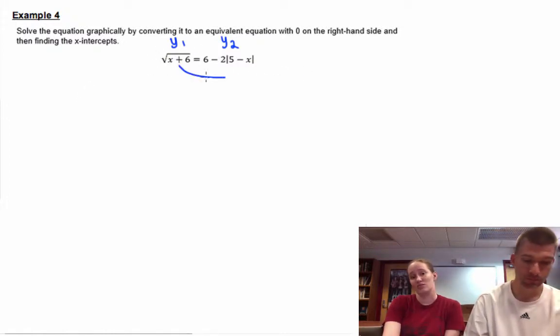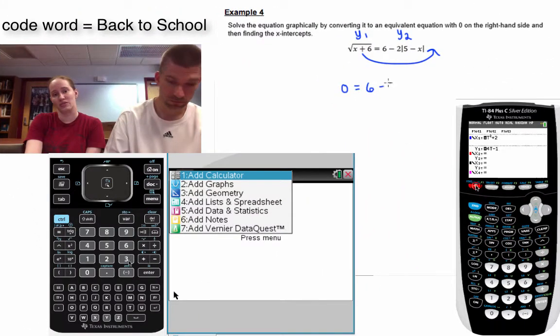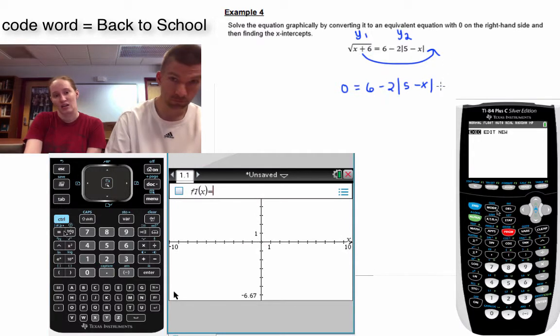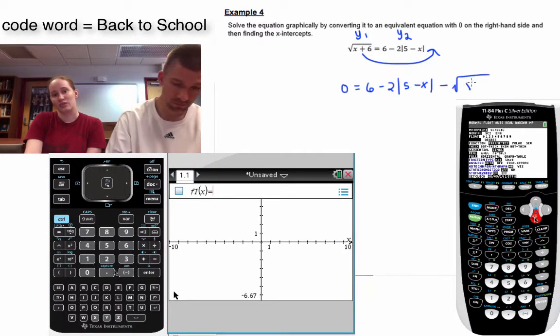So it's quicker to move the square root over and do 0 = 6 - 2|5 - x| - √(x + 6).